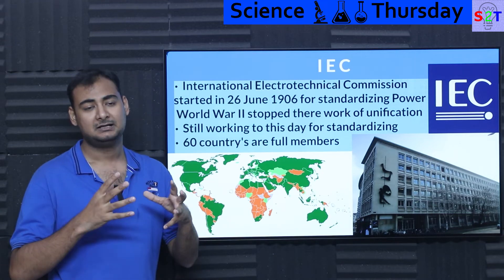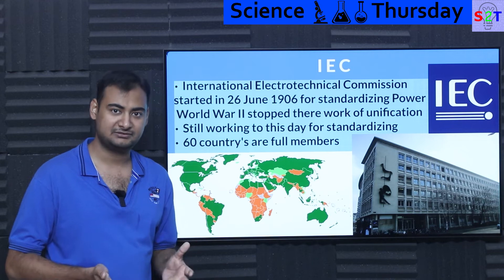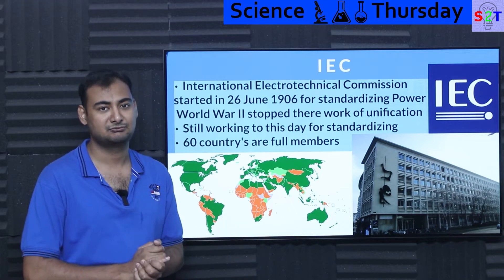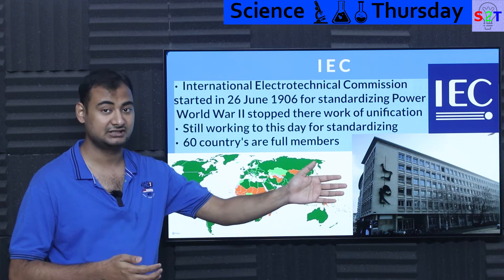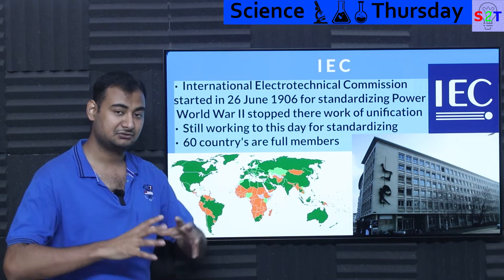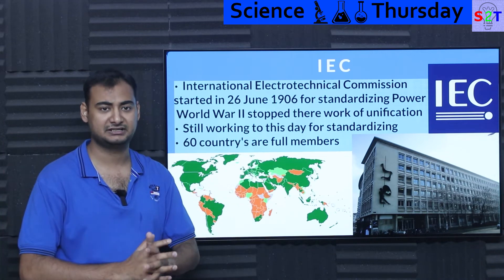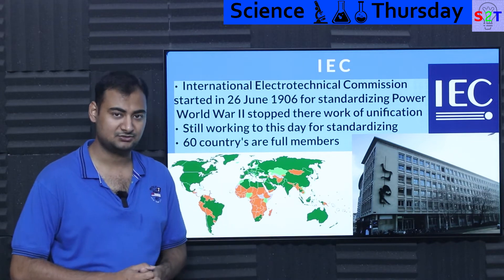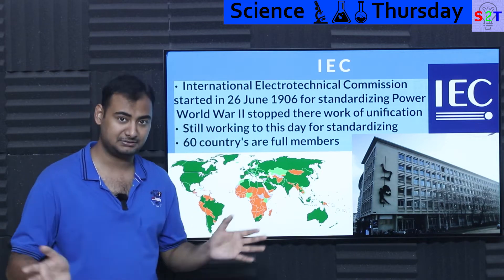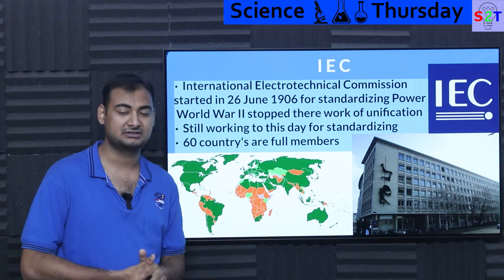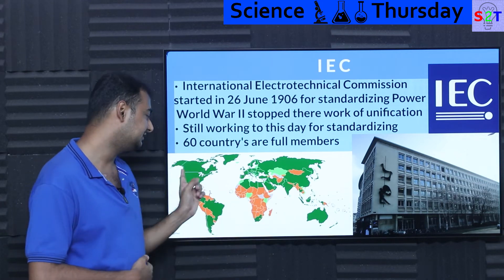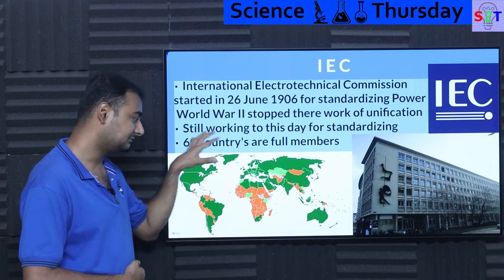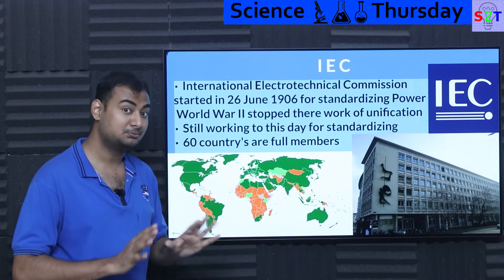Electricity is now relatively safe, though we paid the price in blood to get here — much like how modern jumbo jets became safe only after many tragedies. The IEC pools research knowledge from everybody across the planet. For example, they established that polarized plugs are better than non-polarized, and direct circuits are better than ring circuits. 60 member countries may not sound like much, but it includes India, China, the USA, and Russia — covering the majority of the planet's population.